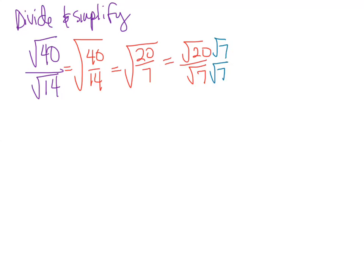And I need to do that in the numerator and denominator. Now, once again, instead of multiplying 20 times 7 and getting a larger number, I know that 20 already has a perfect square factor in it. So I'll go ahead and write 20 as 4 times 5, and then leave the times 7 in there as well. And then my denominator, square root of 7 times square root of 7 is just 7.